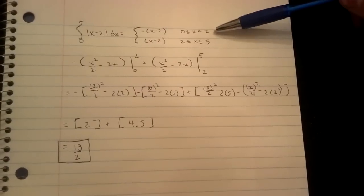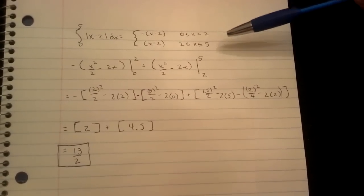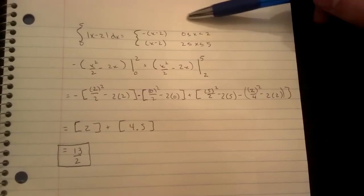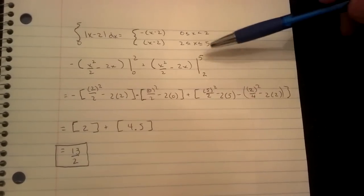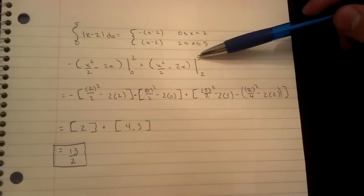The next step is to find where the graph touches the x-axis. We can see that for negative x minus 2, it's from 0 to 2, and for positive x minus 2, it's from 2 to 5.